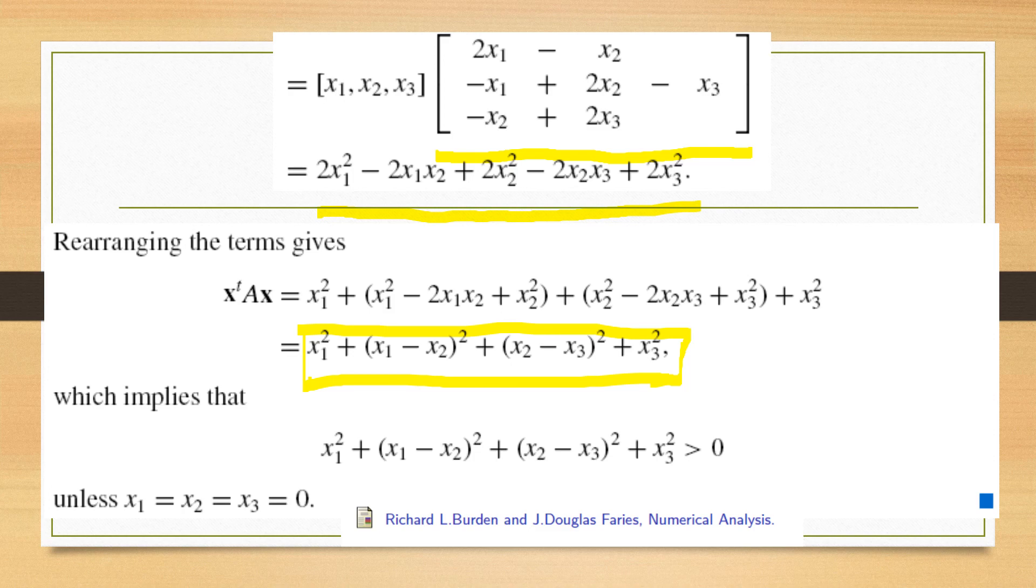Now x1 square is one term. It is definitely a positive term because x1 has its square. And this term is also positive. This term is positive. Similarly this term is positive.